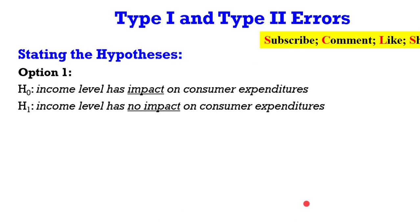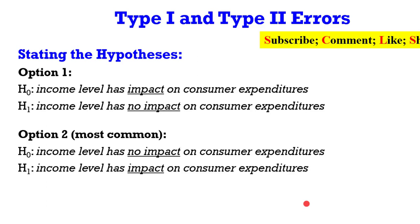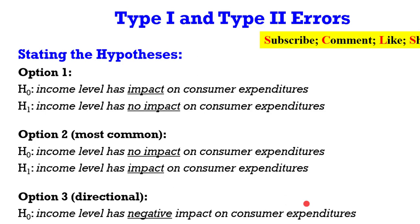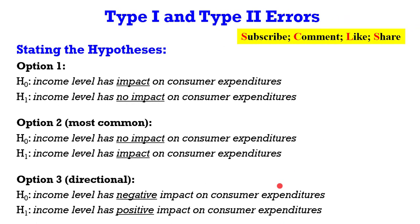I'm going to show you ways by which you can state your hypothesis. For instance, I want to test the relationship between income level and consumer expenditure. Option one: you can state the null and the alternative in one form. Option two is the most common way by which people state their hypothesis — look at the differences between option one and option two. Option three: you can state it in a directional form — income level has a negative impact against the alternative that income level has a positive impact. But option two, the two-sided test, is the most common way people state their hypothesis.